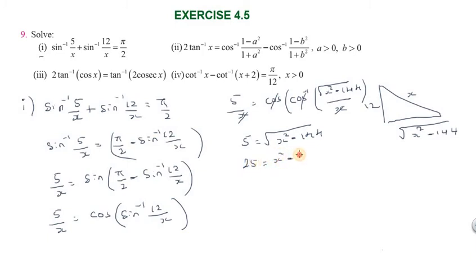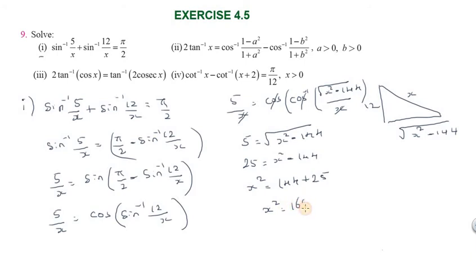Simplifying: 5/x = √(x² - 144)/x, which gives x² - 144 = 25, so x² = 144 + 25 = 169, and therefore x = ±13. That is the answer to the first problem.